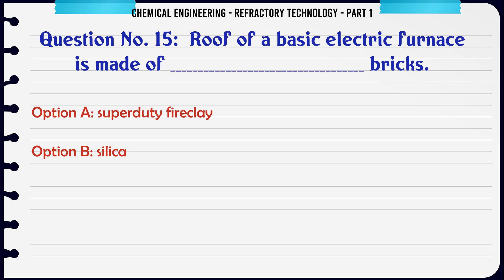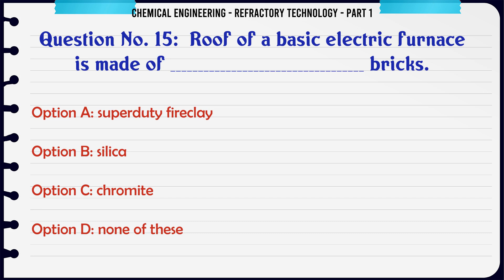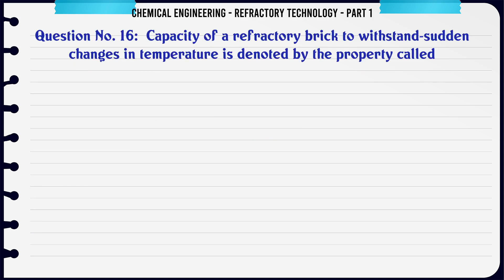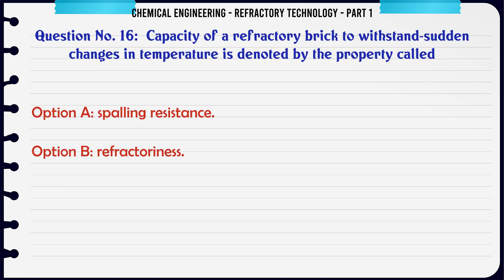Roof of a basic electric furnace is made of ___ bricks. A. Superduty fire clay, B. Silica, C. Chromite, D. None of these. The correct answer is Silica.